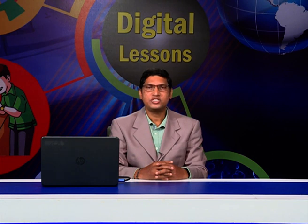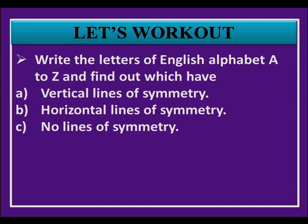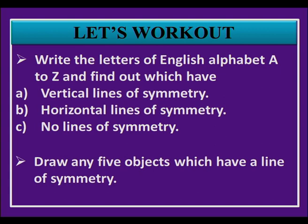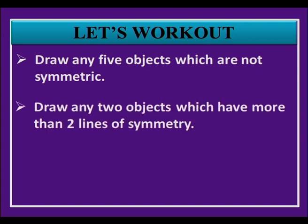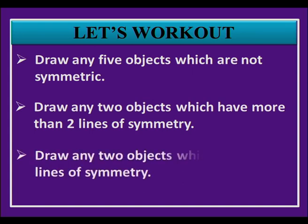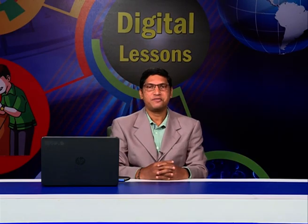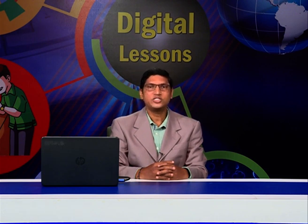I would like to give you some assignment questions to answer and show to your teacher: Write the letters A to Z and find which have vertical, horizontal, or no lines of symmetry. Draw five objects with a line of symmetry, five objects that are not symmetric, two objects with more than two lines of symmetry, and two objects with exactly four lines of symmetry. With this, we come to the end of our session. We will meet in our next digital class — goodbye and take care.